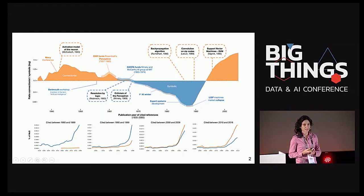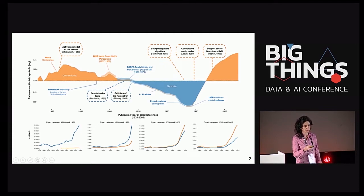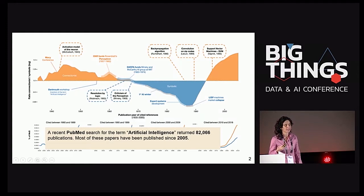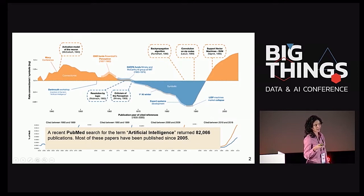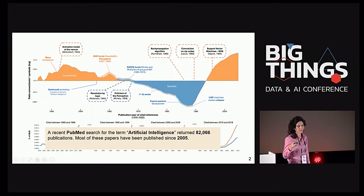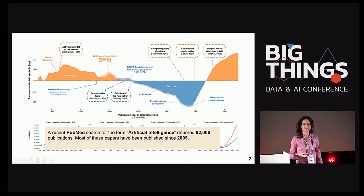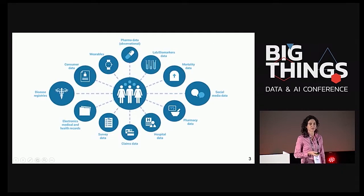¿Qué relación tiene esto con la medicina? Me gusta comparar con el PubMed, porque el PubMed da una idea de cómo va la investigación biomédica. Vemos que desde el 2005 tenemos el auge del número de artículos publicados con el keyword de inteligencia artificial, alcanzando 82.000. Vemos cómo la medicina está empezando a aprovechar los avances que se han hecho con la computación en inteligencia artificial.